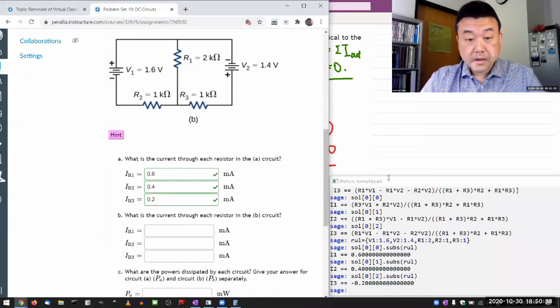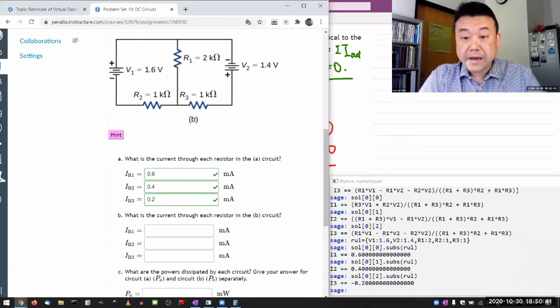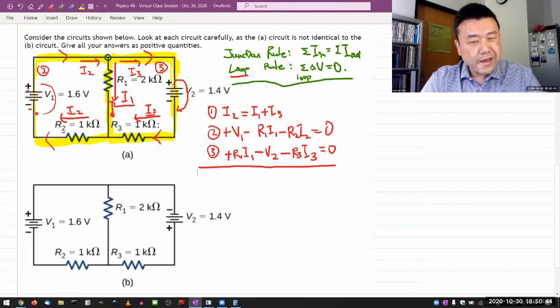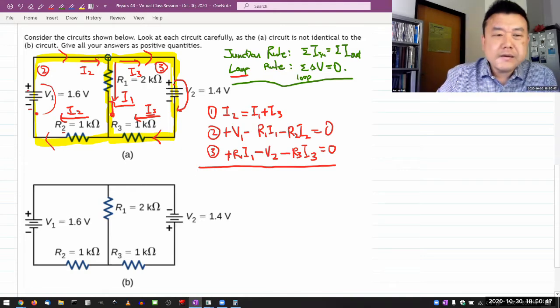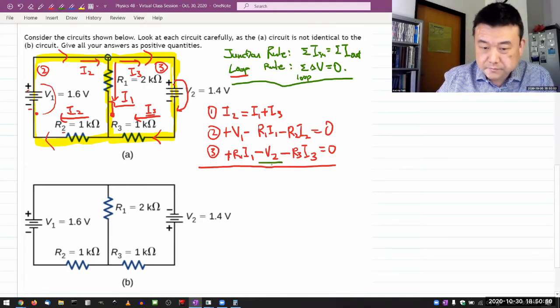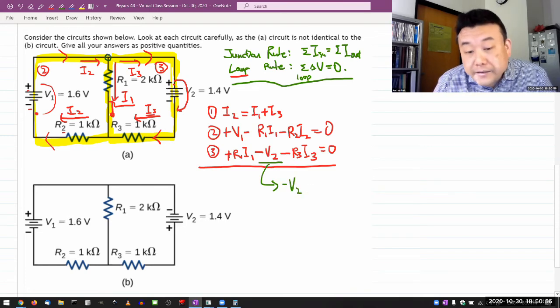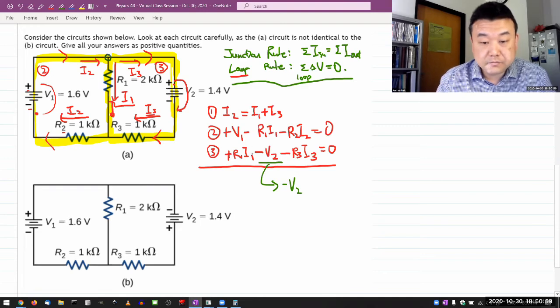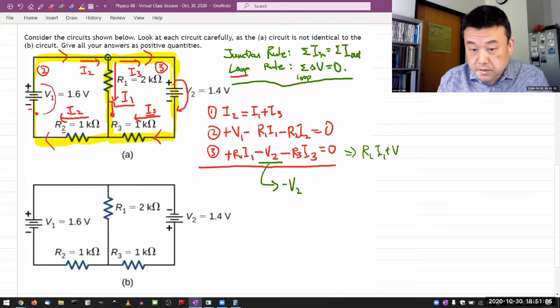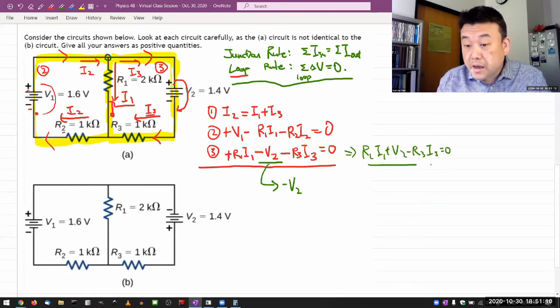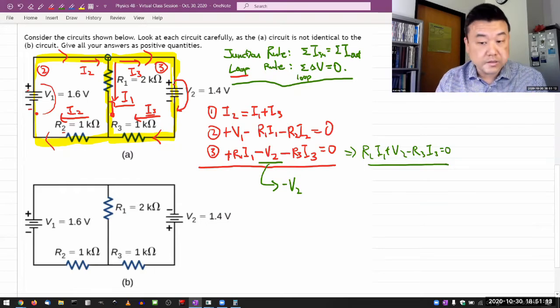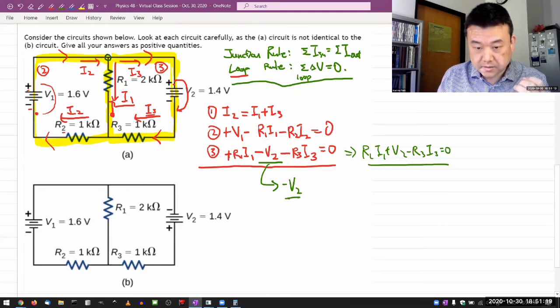Now for part B, this is what I wanted to tell you that I don't have to do any new work. All I really have to do for part B is figure out where V2 is and simply replace it with minus V2. Like once I do that, that'll turn this equation three into R1 I1 plus V2 minus R3 I3 is equal to zero. And technically you can resolve the equation using the new value. But I see that nothing really changes other than this sign changing.